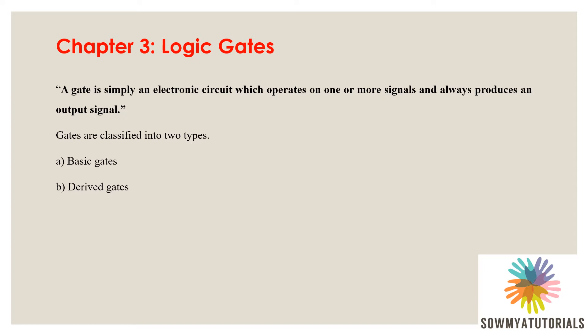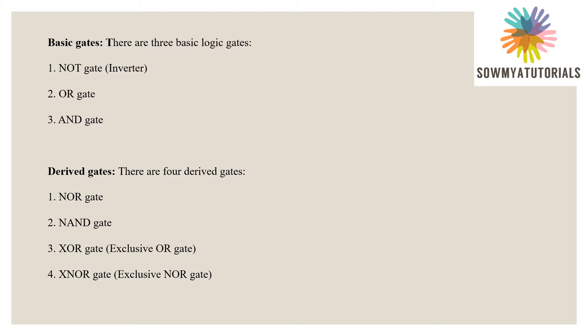These logic gates are classified into two different types: basic gates and derived gates. The basic gates are three types: NOT gate (also called inverter), OR gate, and AND gate. The derived gates are four types: NOR gate, NAND gate, exclusive OR gate, and exclusive NOR gate.